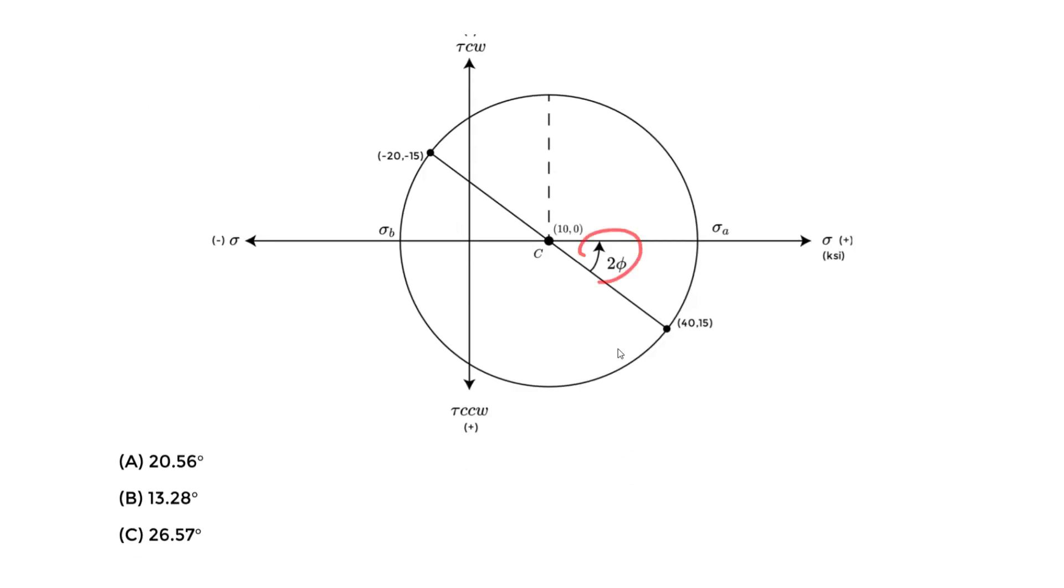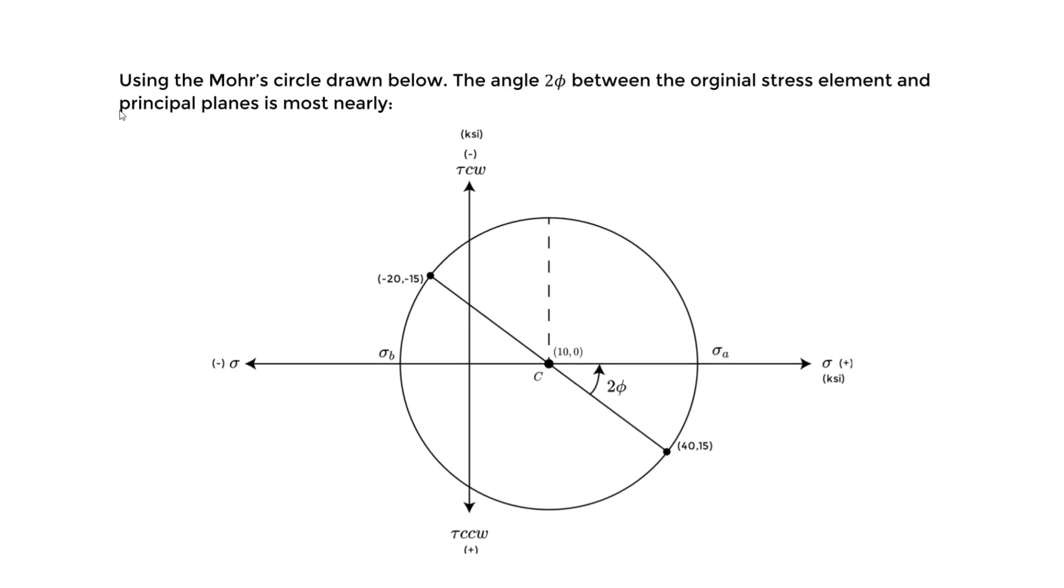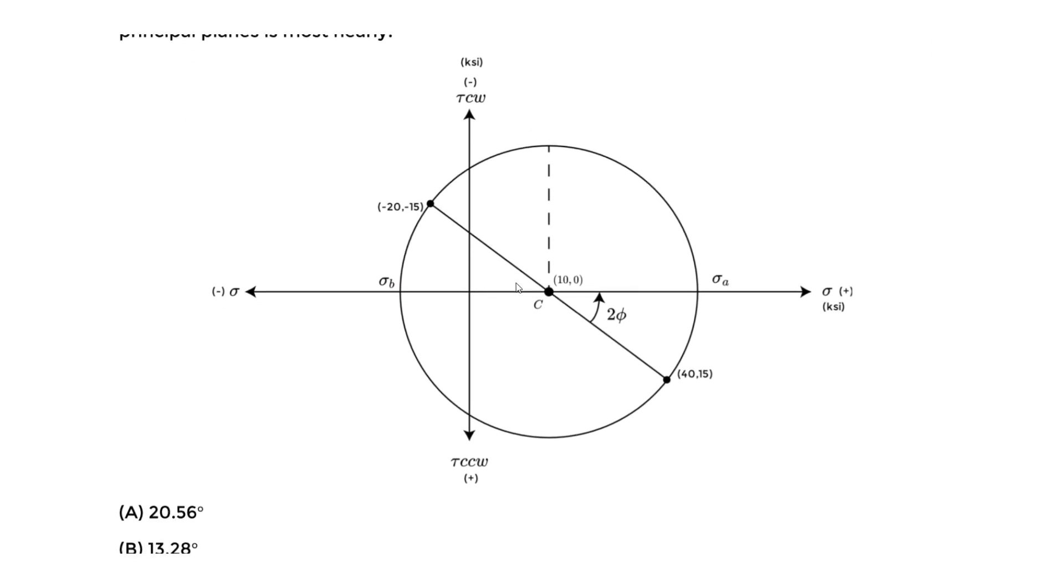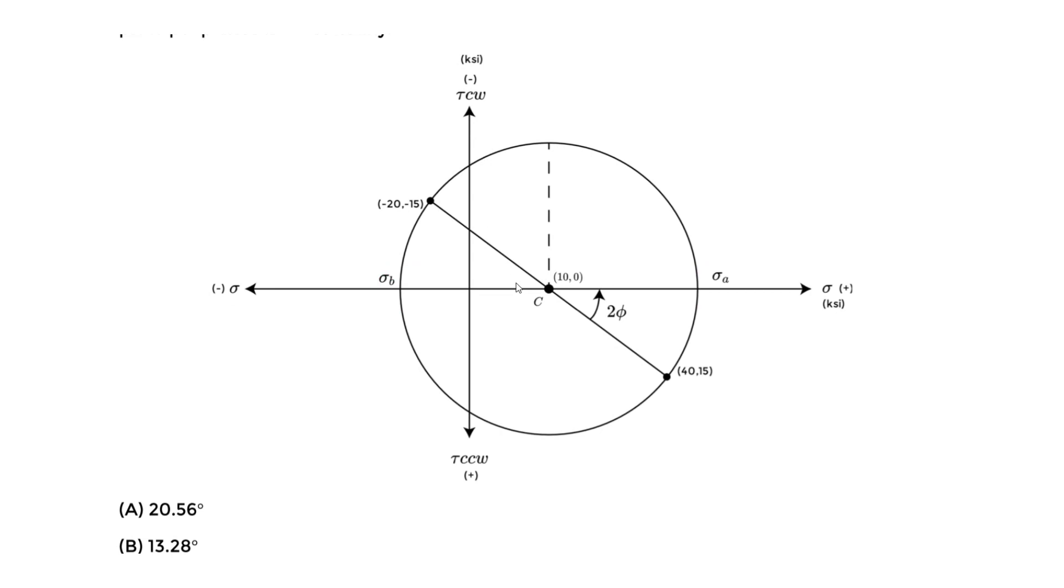What is this angle we have to rotate from the original stress element, which is this line? This is the original conditions that we graphed. We have to rotate this angle here to reach this major plane, this new plane, and we call it the principal plane where we have the major and minor principal stresses. We have to rotate this angle.